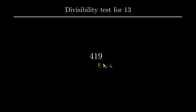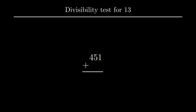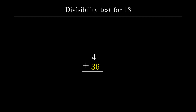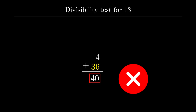Consider the number 4198. The units digit 8 is multiplied by 4, and the product 32 is added to the remaining digits 419, giving a sum of 451. Since the number is still large, again the sum is obtained by adding the product of the last digit 1 and 4 to the remaining digits 45, giving 49. Further, 9 is multiplied by 4 and added to the remaining digit 4, giving 40. Since 40 is not divisible by 13, the given number is not divisible by 13.